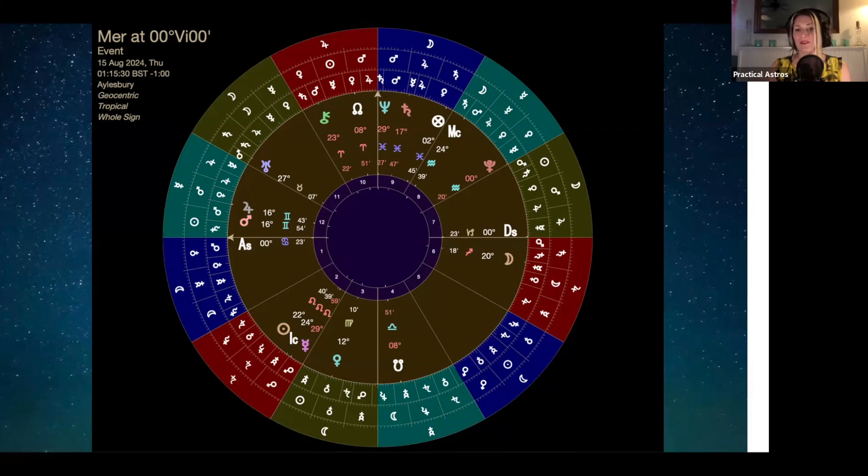Mercury is at that very final degree retrograde of Virgo, and then it goes back into Leo. So it's retrograding back. It has about eight more degrees. It's very slow.